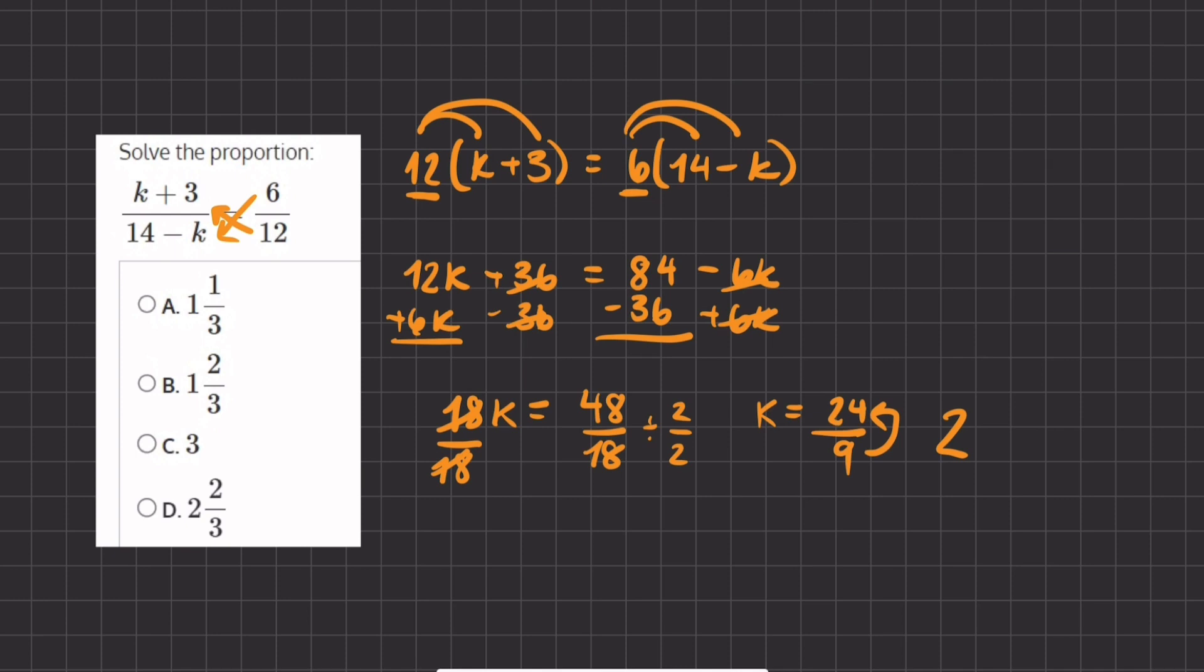How many do we have left over? If 9 goes into 24 two times, we have 18. And the difference between 24 and 18 will give us 6. And we will keep our denominator of 9.